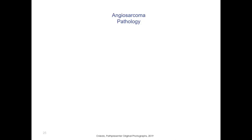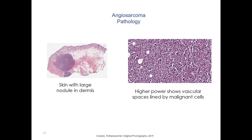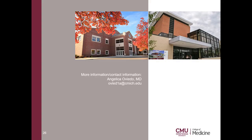Let's take a look at the pathology. This particular case is angiosarcoma in the skin — you can see that the large nodule represents the angiosarcoma. At high power, you can see there are vascular spaces which are lined by malignant cells. This is the appearance of angiosarcoma. Okay, that's it.